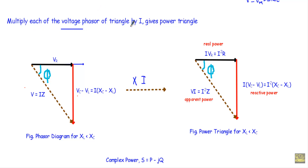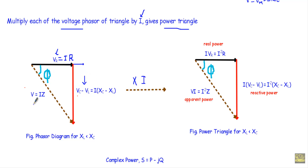If we multiply the voltage phasors of the triangle by current I, that gives us the power triangle. In the phasor diagram when XL is less than XC, we represent VR equal to I·R on the horizontal axis and VC minus VL on the vertical axis. The applied voltage phasor V equals I·Z, where VR equals I·R and VC minus VL equals I·(XC minus XL).